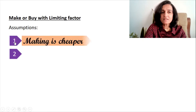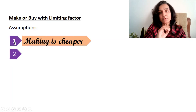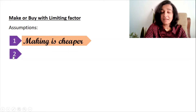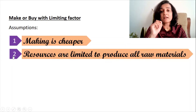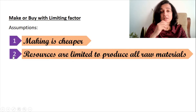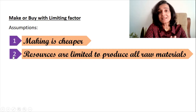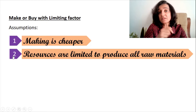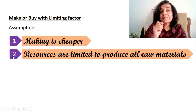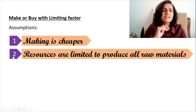The first assumption is that making is cheaper. The second is that resources are limited to produce all the raw materials. So we would definitely like to make all the raw materials because that is cheaper, but unfortunately our resources are limited. In this particular problem, the limited resource is direct labor hours. So how do we tackle such problems?